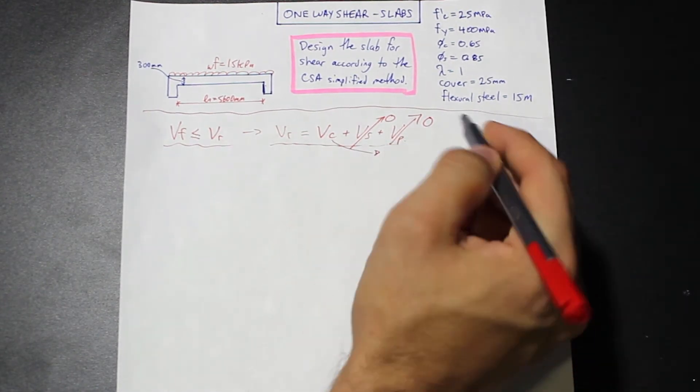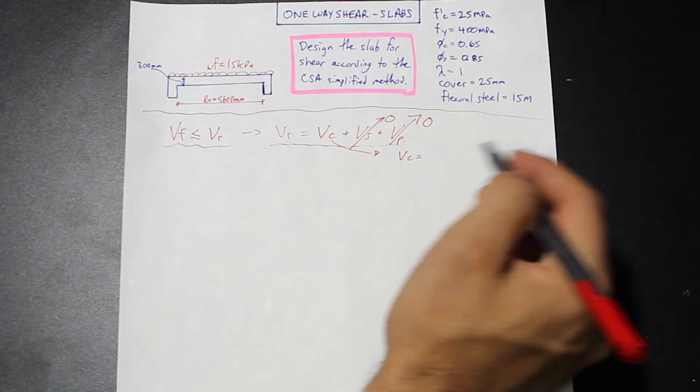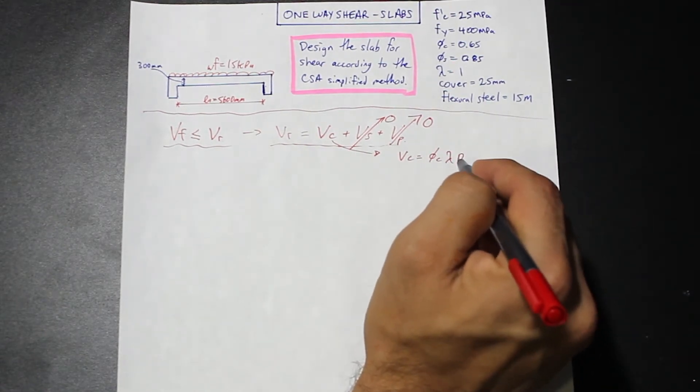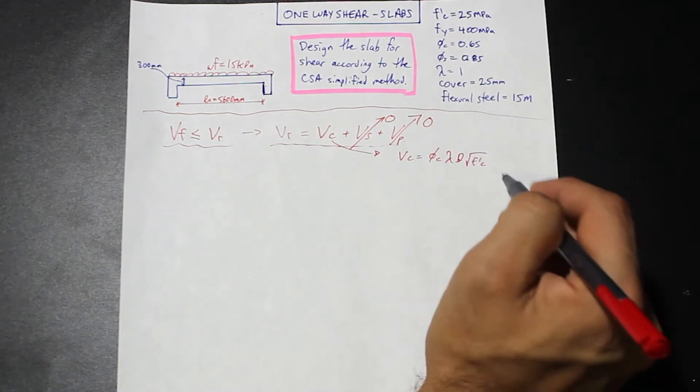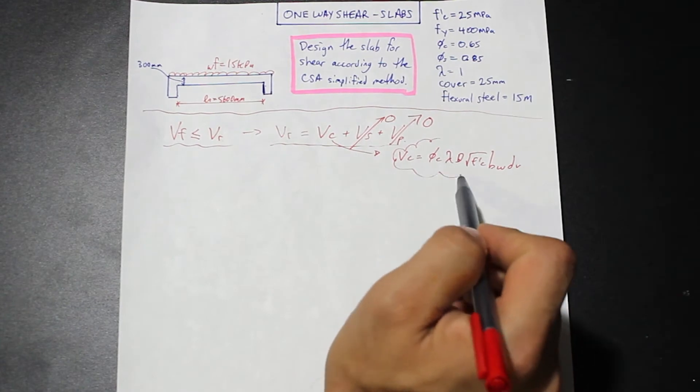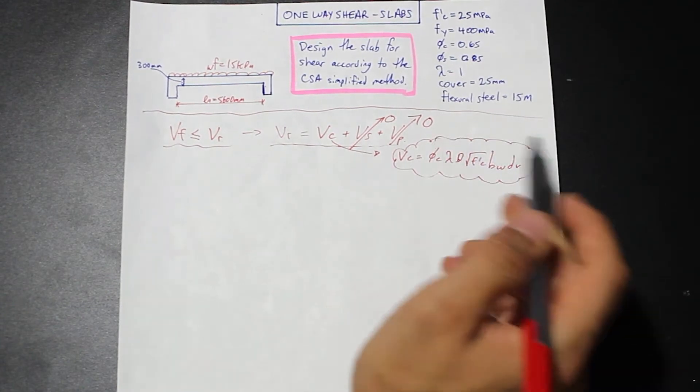The formula for VC is phi c times lambda times beta times root f prime c times bw times dv. I'm just going to highlight that because we're going to come back to that.